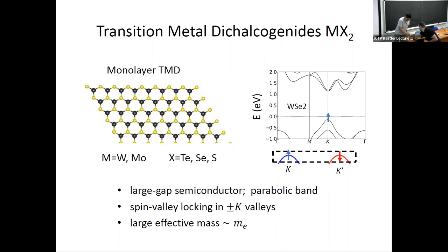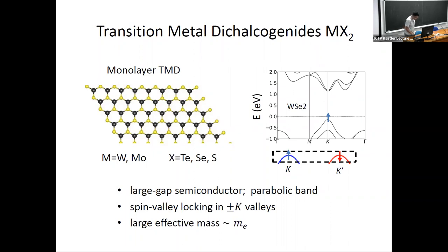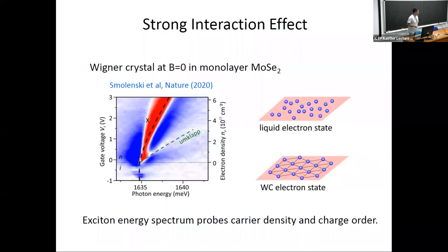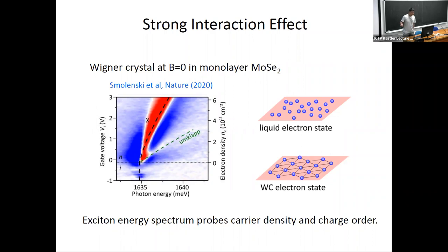Together combining the two valleys K and K', they form a spin-full 2D hole gas with a relatively large effective mass on the order of the electron mass. This large effective mass leads to strong interaction effects — even in a monolayer MoSe₂ a Wigner crystal state was observed without any external magnetic field, because rₛ is large at this density range on the order of 10¹¹. This experiment measures the exciton energy spectrum as a function of carrier density.